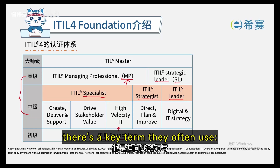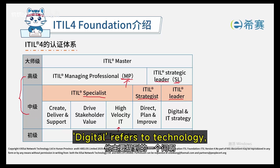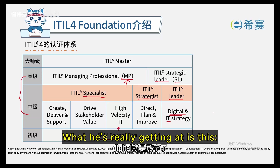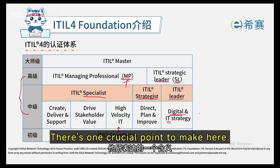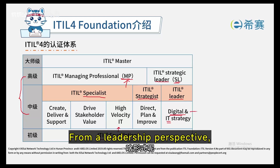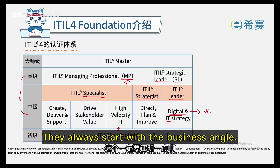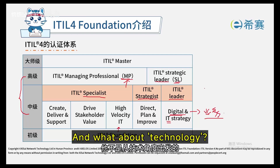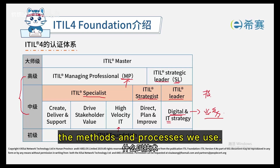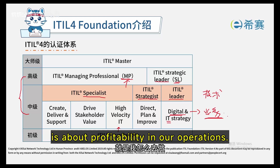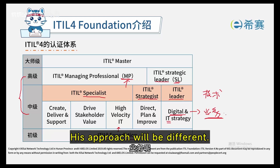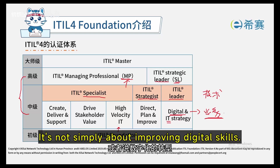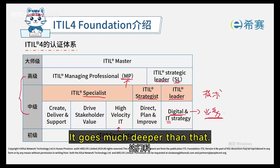Those two subjects: one involves strategists, focusing on guidance and direction; the other involves leadership, focusing on the executive level and strategic leadership. In strategic leadership, there's a key term they often use: digital transformation. Digital refers to technology, so it's about transforming IT and business processes. From a leadership perspective, they always start with the business angle, not from a technical standpoint. Technology is about the methods and processes we use; business, on the other hand, is about profitability in our operations. Digital transformation is not simply about improving digital skills — it goes much deeper than that.